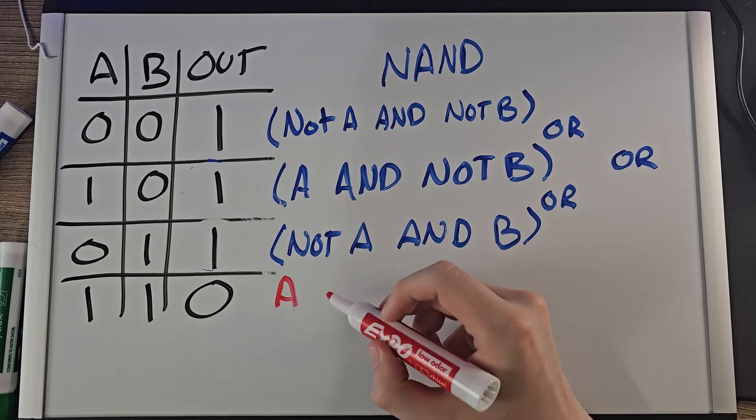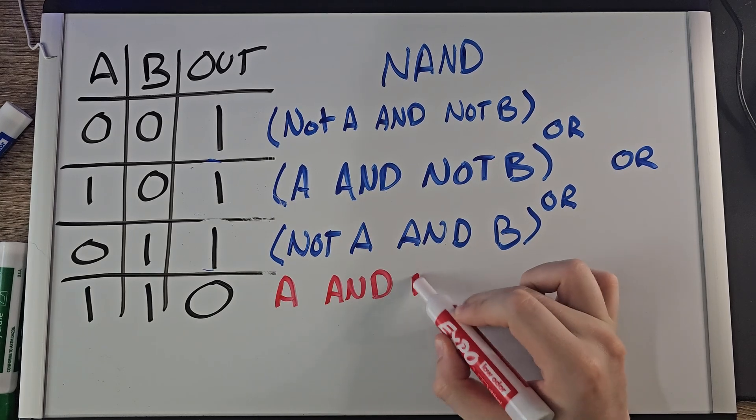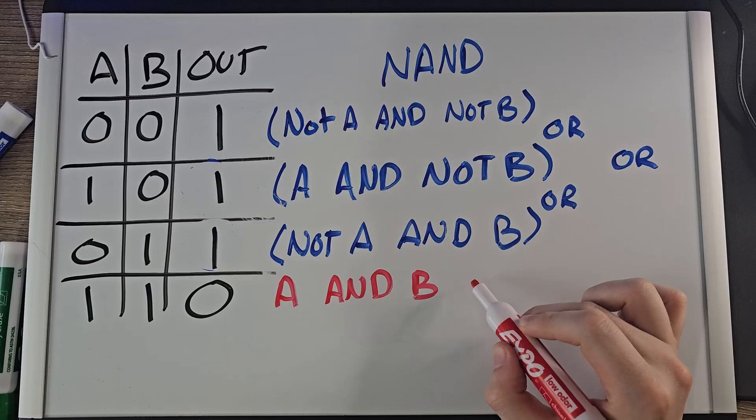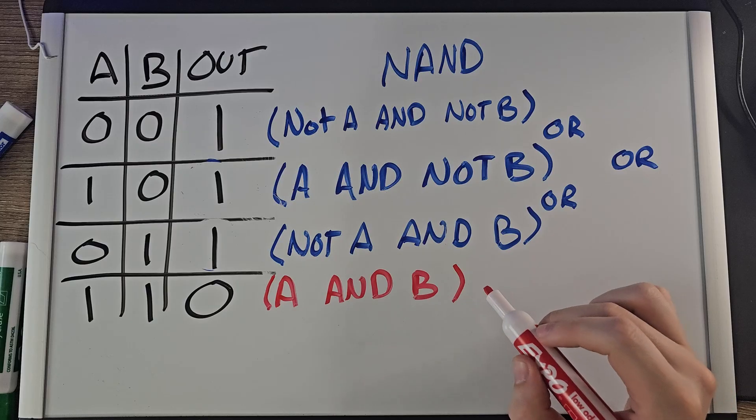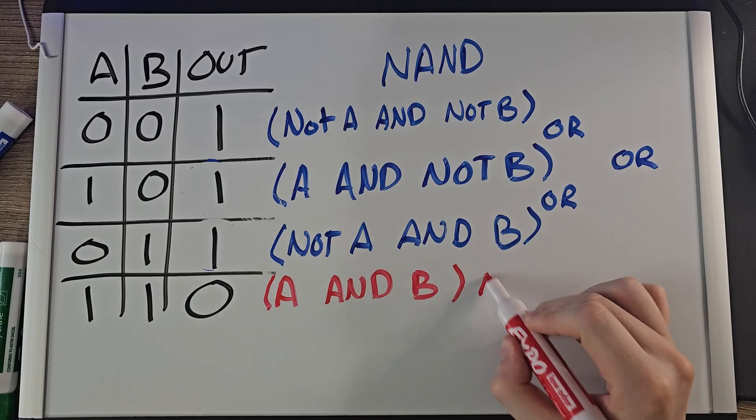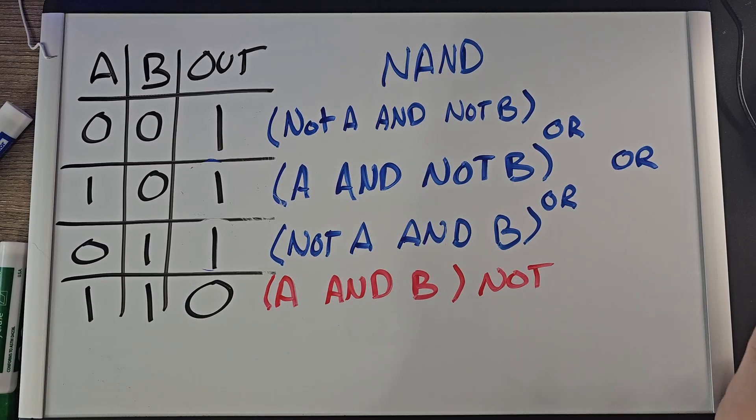This would be A AND B. But we know that's not true. Because if it were A AND B, that would just be AND. If the output is zero, that just means we have to reverse it. This would be NOT of A AND B. So let's visualize this.